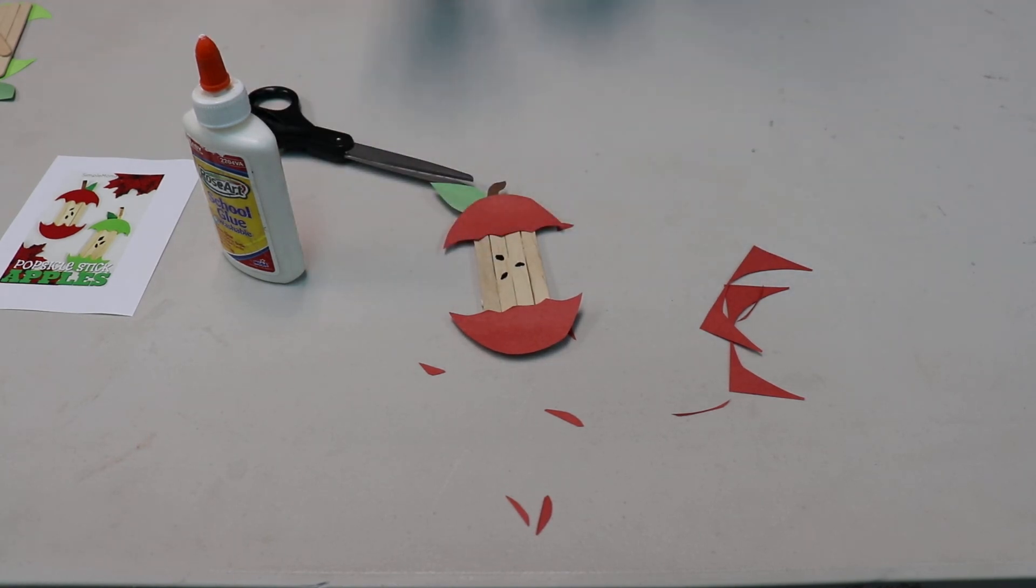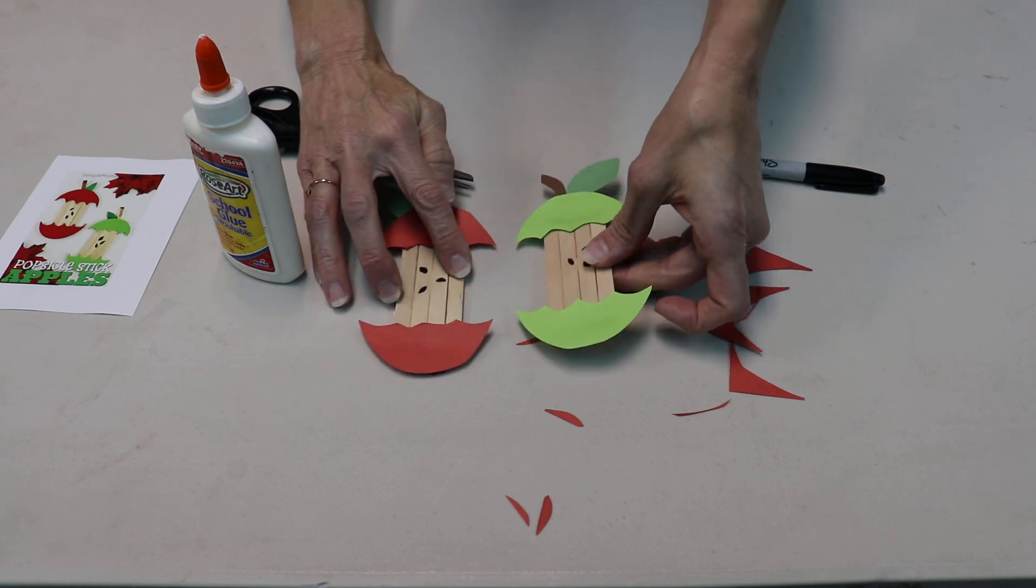Just like that. So then you will have an apple core and you'll have either red or green.